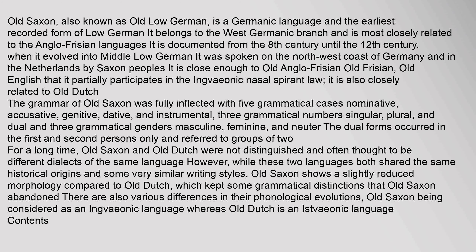The grammar of Old Saxon was fully inflected with five grammatical cases: nominative, accusative, genitive, dative, and instrumental; three grammatical numbers: singular, plural, and dual; and three grammatical genders: masculine, feminine, and neuter.